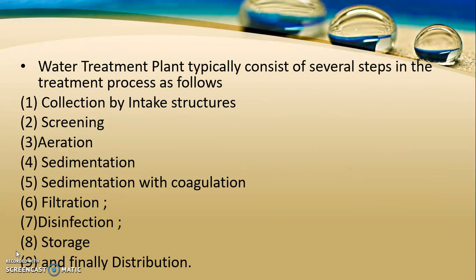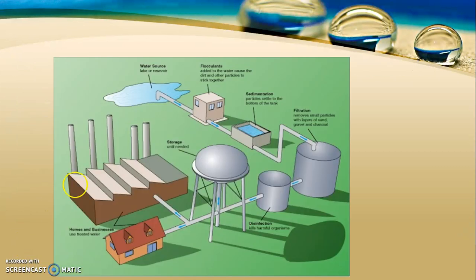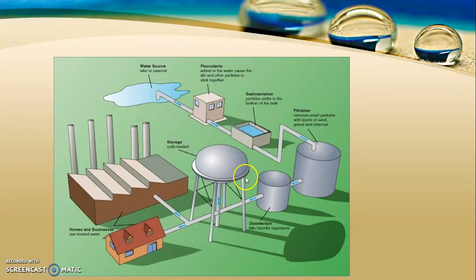The unit processes are: first, collection by intake structures; second, screening; third, aeration; fourth, sedimentation; fifth, sedimentation with coagulation; sixth, filtration; seventh, disinfection; eighth, storage; and finally, distribution. This is a simple layout showing the Water Treatment Plant and its distribution. Water is collected from natural water sources, goes through the different treatment units in the Water Treatment Plant, then stored in an elevated service reservoir from where it is distributed to homes and industries.